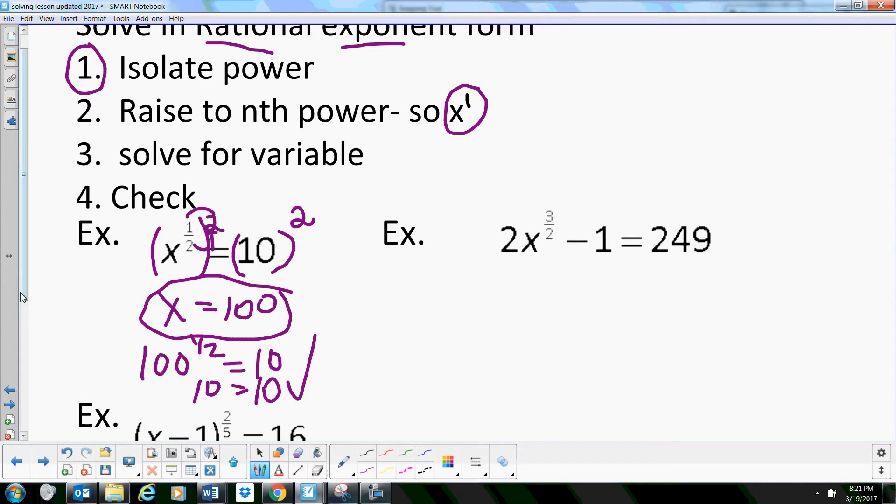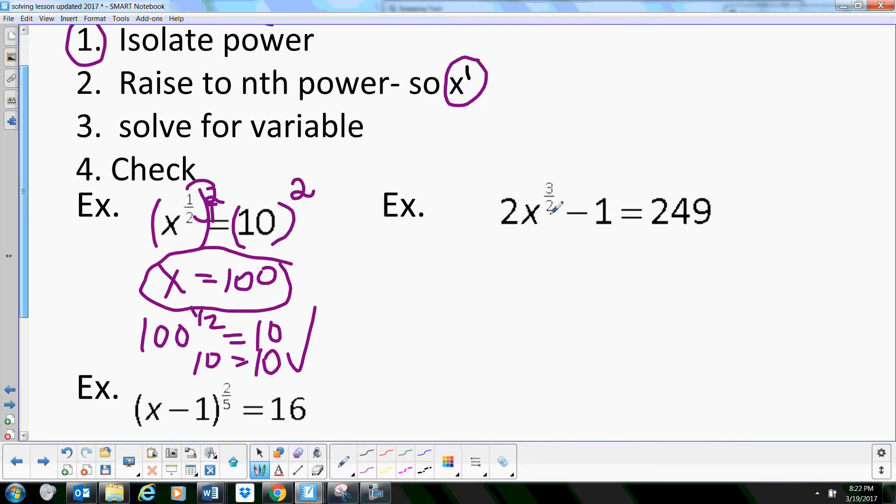Let's look at one that's a little more involved. So we've got 2x to the three-halves minus one. We want to isolate this term right here. So we're going to add one to both sides, and we're going to get 250. So 2x to the three-halves is equal to 250. And then we're going to divide by two. So we get x to the three-halves is equal to 125.